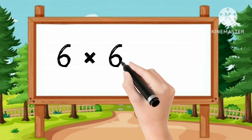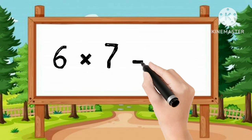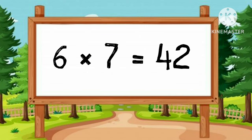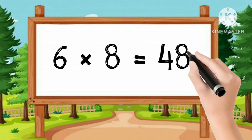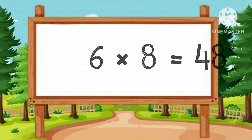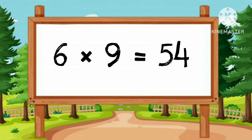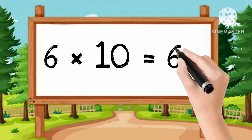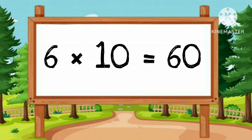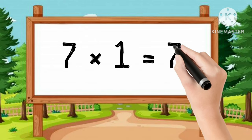6-6s are 36. 6-7s are 42. 6-8s are 48. 6-9s are 54. 6-10s are 60.